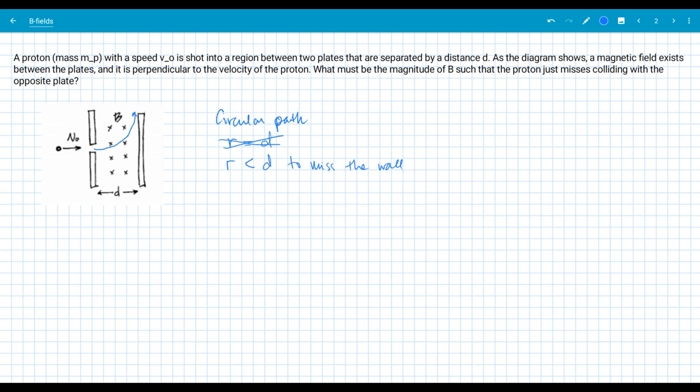So what is my force here? Well, I know I can define this force as q v cross b. This is my general equation where I'm looking at the force on a moving point charge. And in this particular case, this is a proton, right? So I know that that proton has some charge on it.